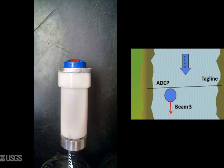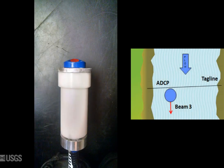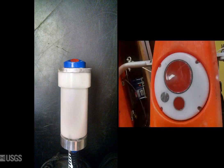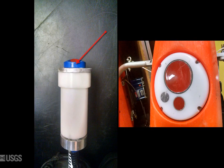The correct orientation for the ADCP with the Y-velocity method is to have beam 3 facing downstream, perpendicular to the tagline. Beam 3 is clearly marked on all TRDI ADCPs, including the River Ray.